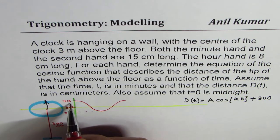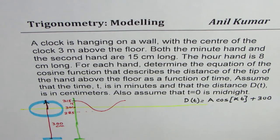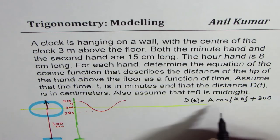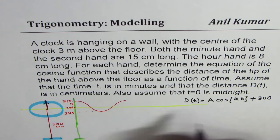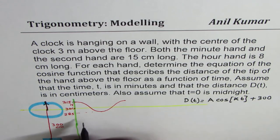The amplitude is going to be length of the minute hand. So for the minute hand, let's calculate for the minute hand what is the value of k and what is amplitude A.